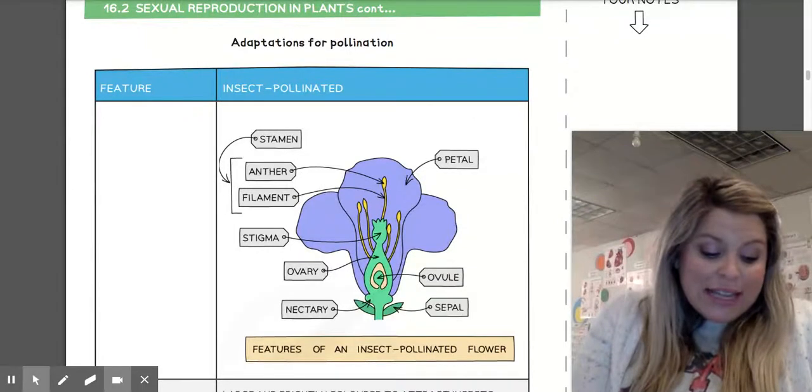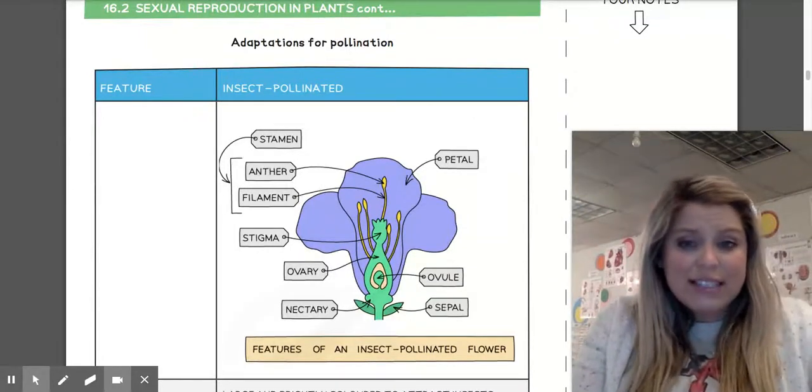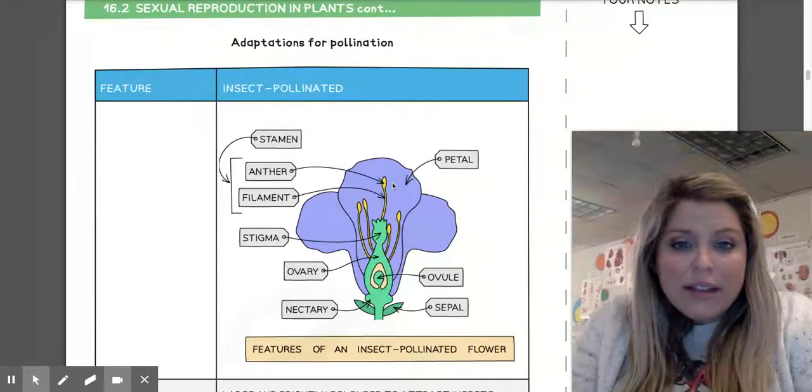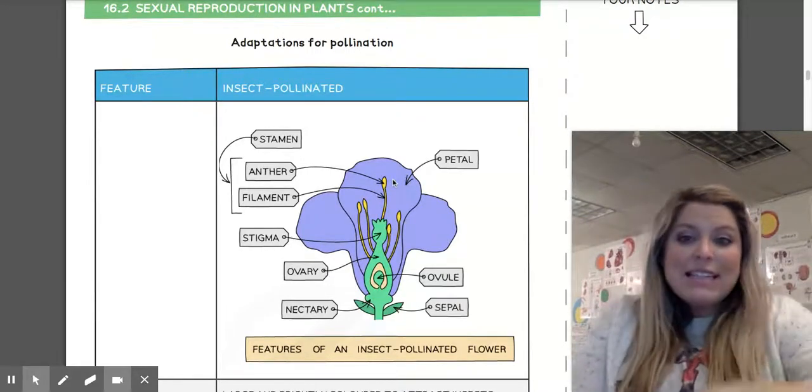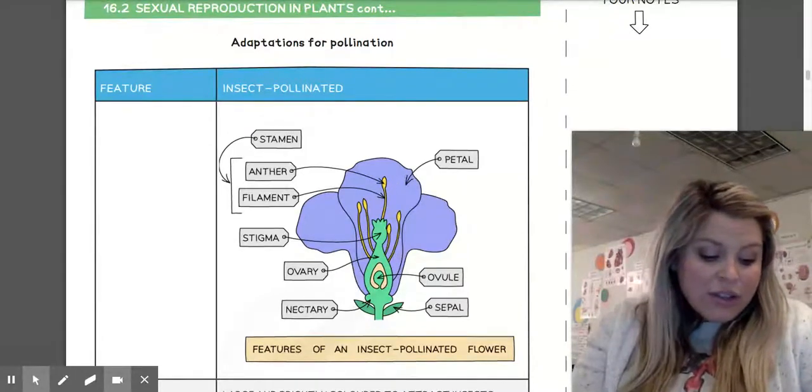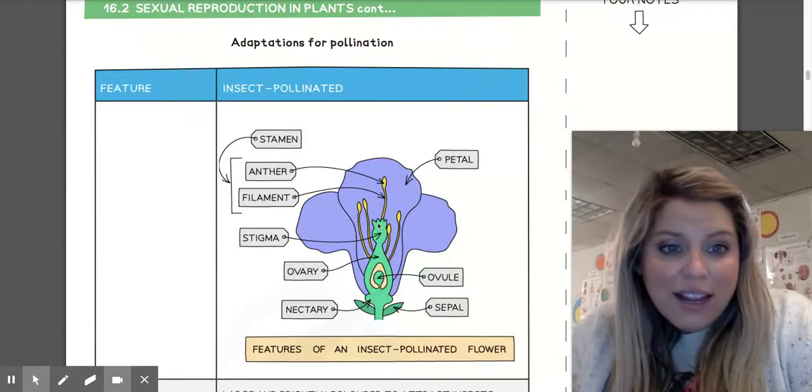And then the anthers inside of the flower - they're very stiff and firmly attached so they can brush against insects. So this would be your anther right here that I'm circling with the mouse. And then the stigma is going to be inside the flower, very sticky, so that pollen grains can stick to it when an insect brushes past it. And the stigma is right here.